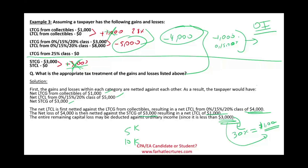Capital gains and capital losses from capital assets is a very important topic in taxation. Whether you are a CPA or EA candidate or accounting student, you really need to understand this topic inside out. Capital assets — Section 1221 — is very important. Good luck, study hard, and stay safe.